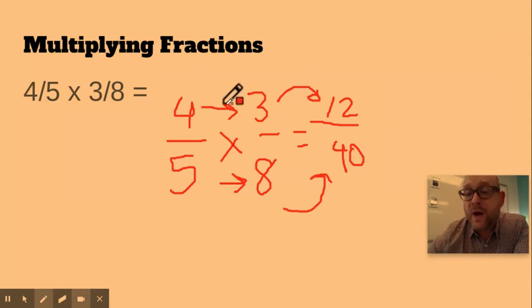First of all, if you have a fraction of a fraction, that means you're taking less than a whole thing of something that is less than a whole thing. Your numbers are going to be smaller than either of your two factors. Your product will be smaller than either of the two factors.